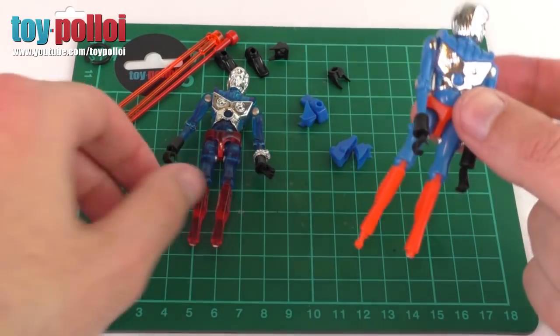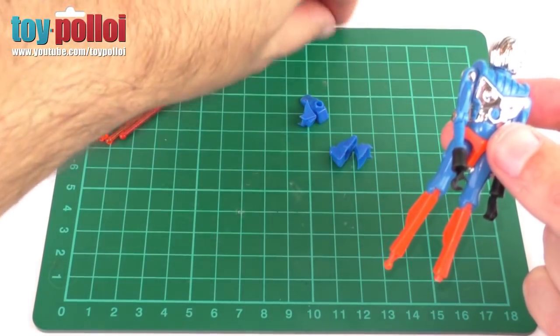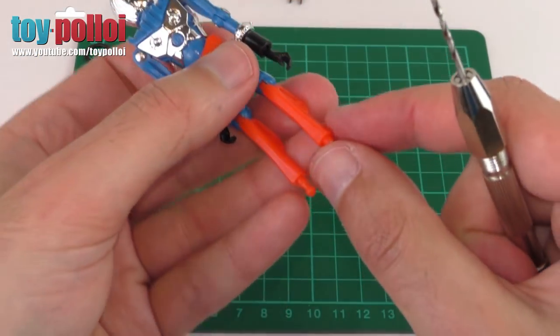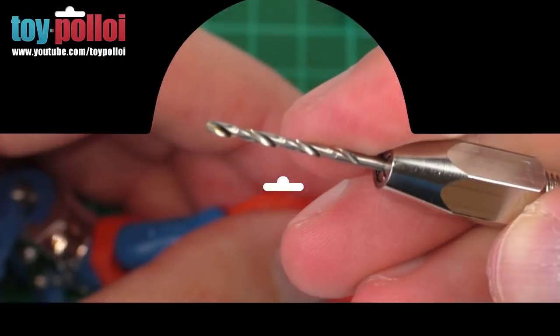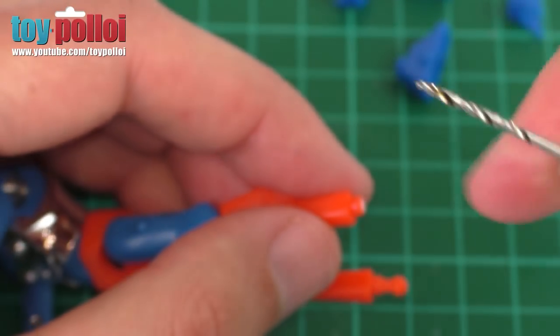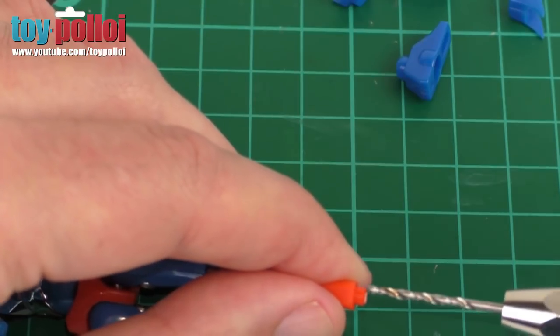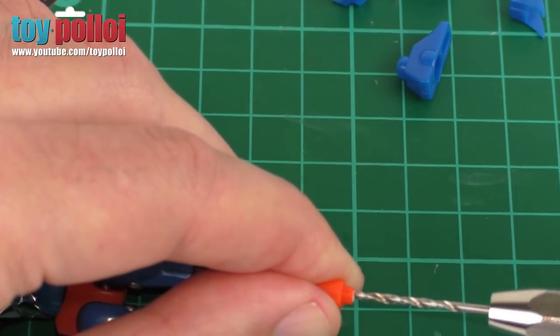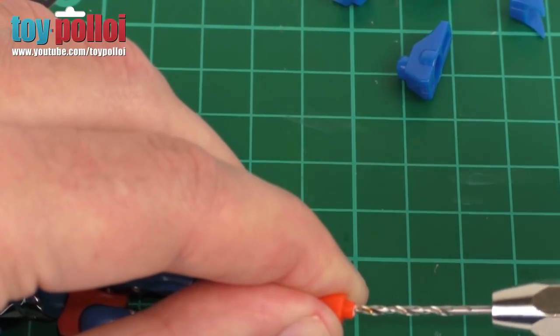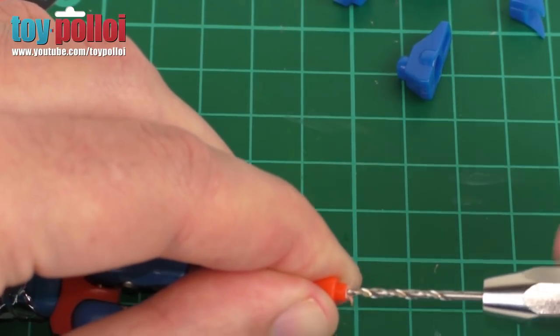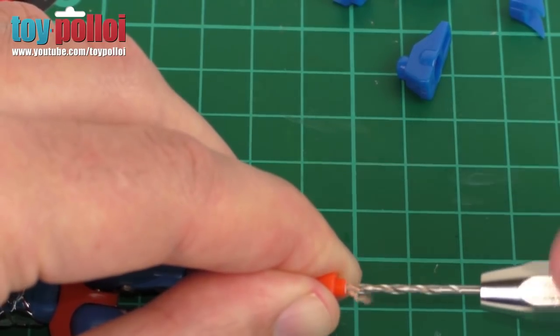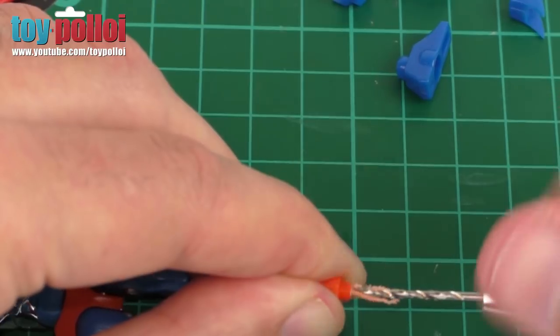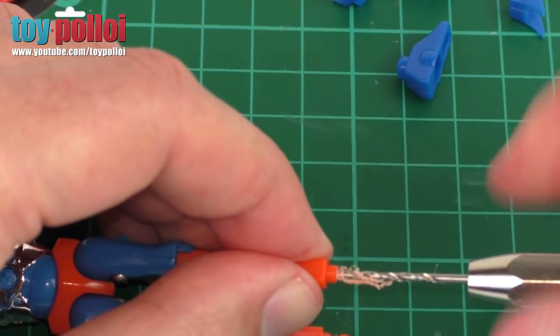I've got my pin vice with the drill bit in and I'm just going to go very slowly and drill a hole in the end of this leg. The great advantage with a pin vice is that you've really got full control over what you're doing because it only goes as fast as you turning the drill bit. We need to go in maybe two or three millimeters so there's enough fixing there.